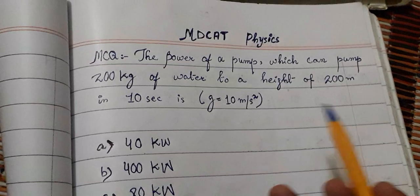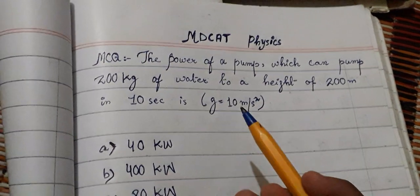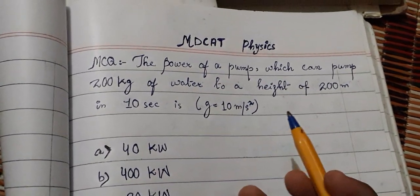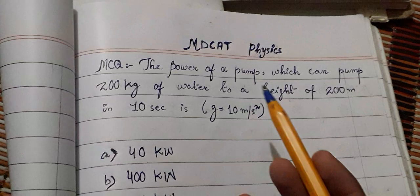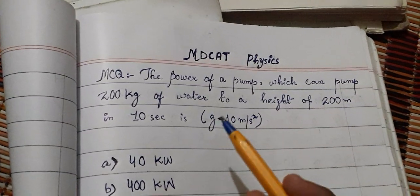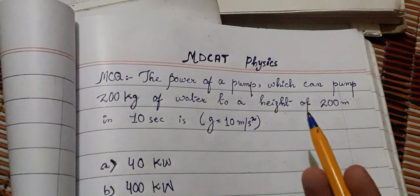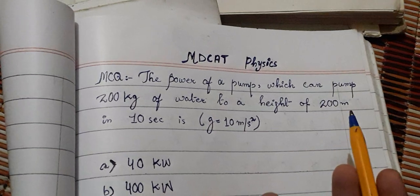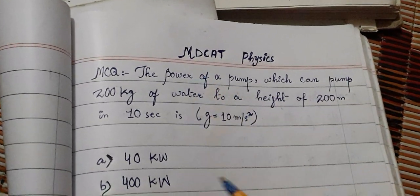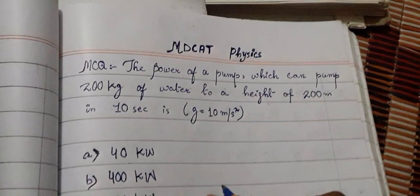height of 200 meters in 10 seconds? Gravity is given as 10 meters per second squared. We need to find the power of the pump which pumps 200 kg of water to a height of 200 meters. We will use a formula to solve this.